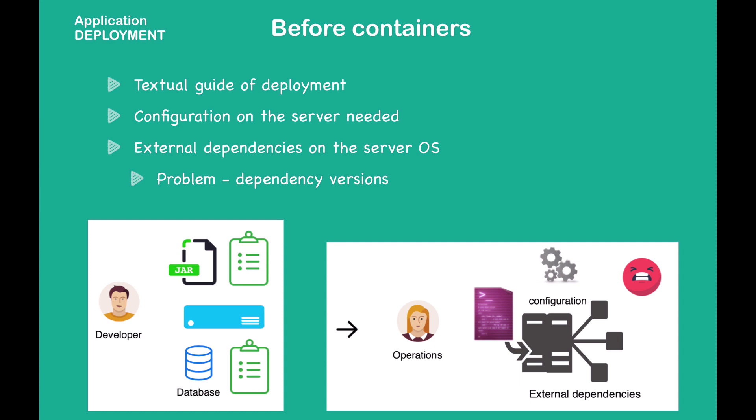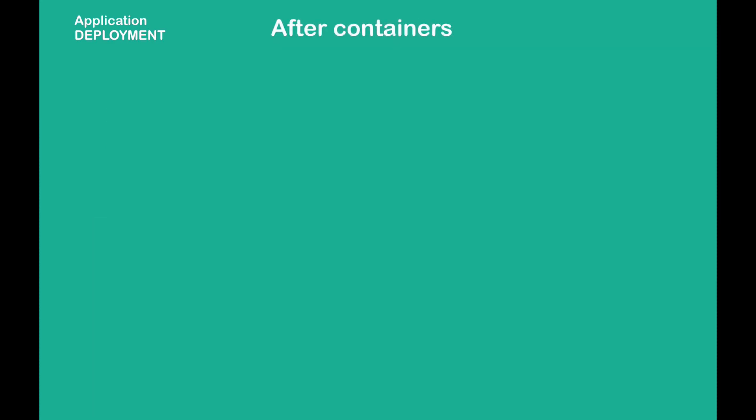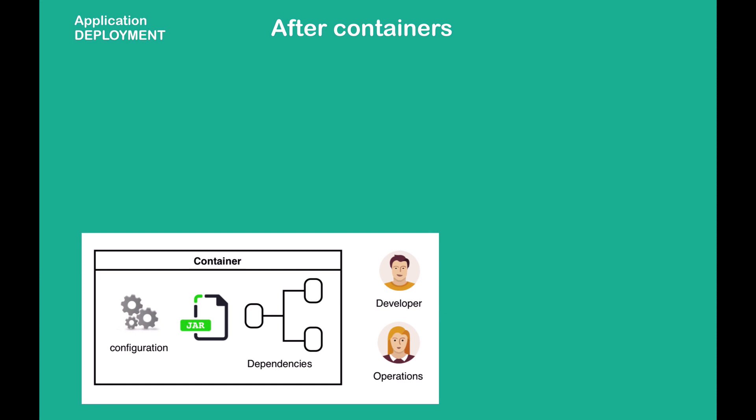Another problem is misunderstandings between the development and operations teams, because everything is in a textual guide. Developers might miss mentioning important configuration points, causing failures. This leads to back-and-forth communication until the application is successfully deployed. With containers, this process is simplified because developers and operations work together to package the whole configuration and dependencies inside the application.